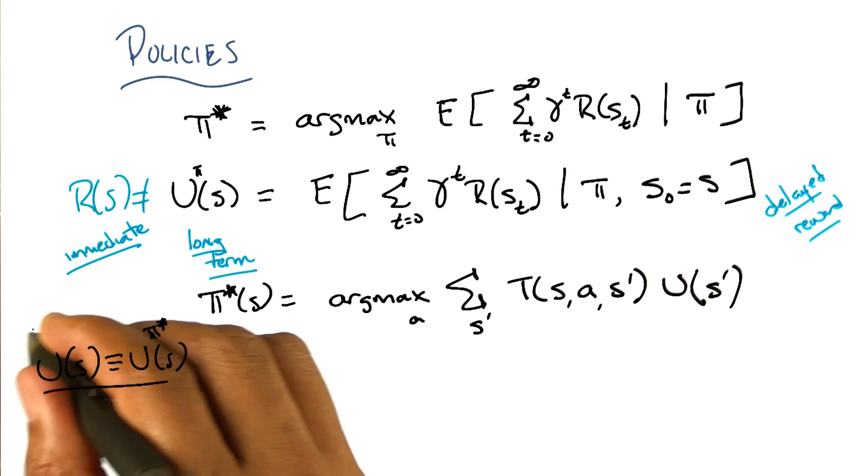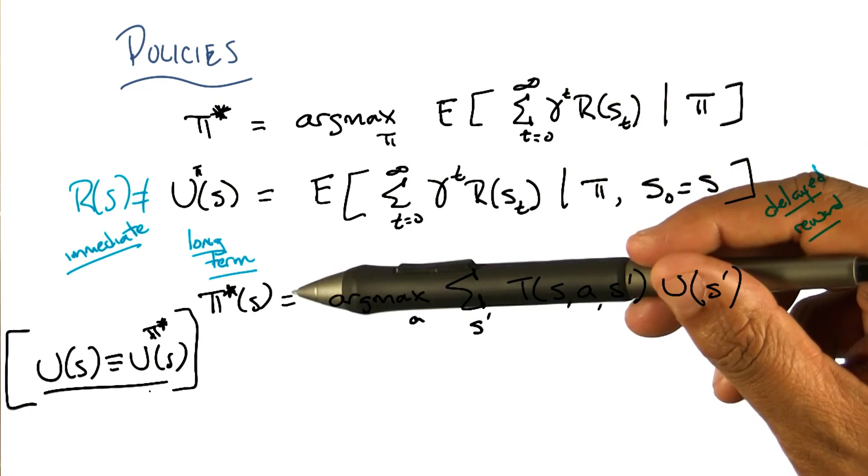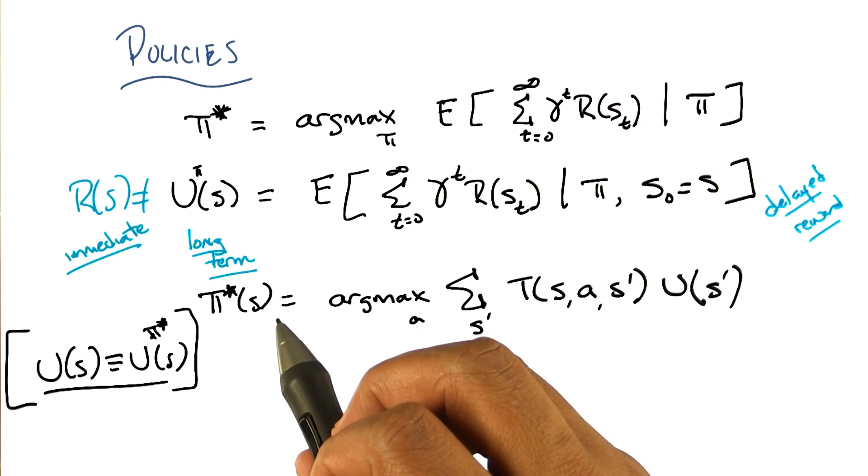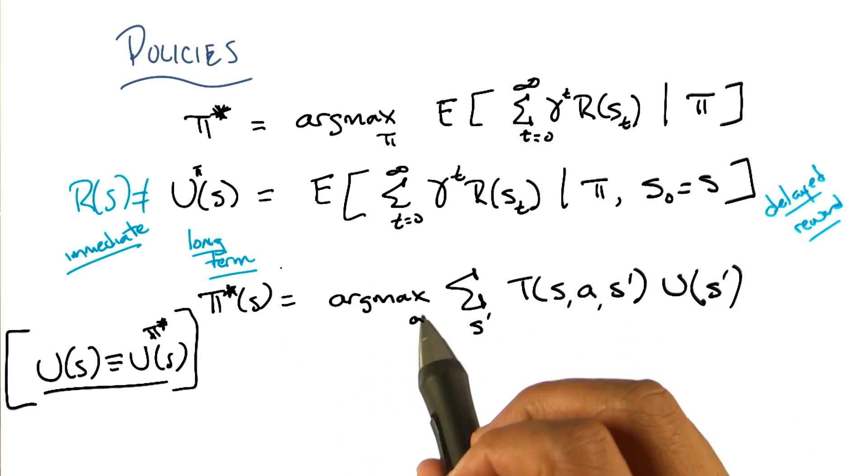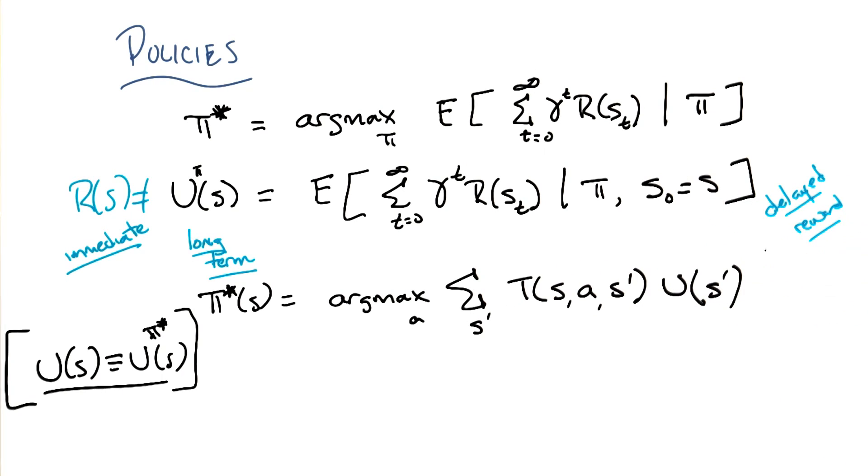I see. So I'm just going to write this off to the side here, it's something for you to remember. So this says then that the optimal policy is the one that for every state returns the action that maximizes my expected utility. With regard to the optimal policy, it feels rather circular.